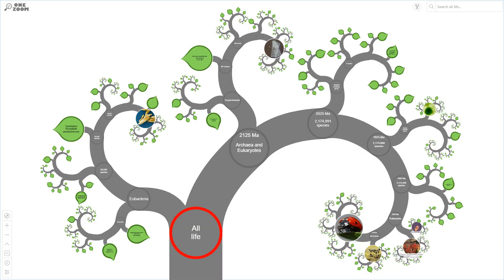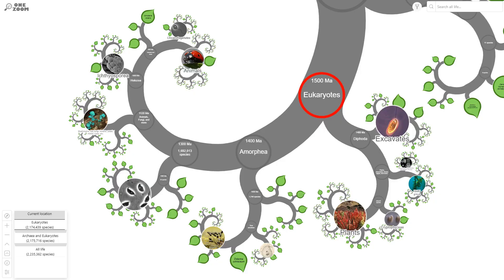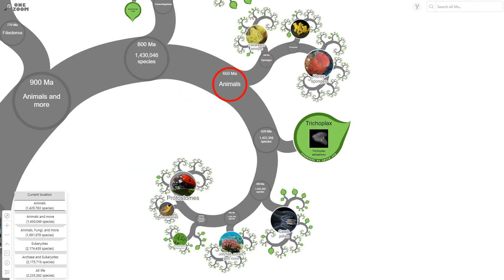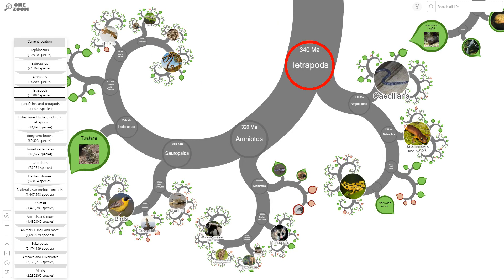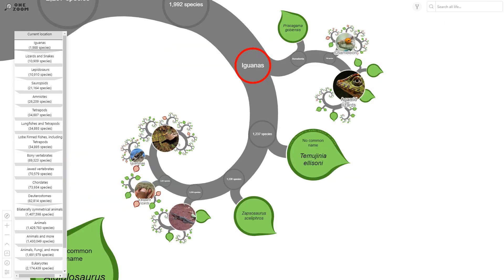To start off, let's give a rundown of the bearded dragon's taxonomy. This is basically where the animal is ranked on the phylogenetic tree of life, looking at which branch the particular organism lies along. The bearded dragon belongs to the clades Eukaryota, Opisthokonta, Metazoa, Bilateria, Chordata, Gnathostomata, Tetrapoda, Lepidosauria, Squamata, Iguania, Agamidae, Amphibolurinae, and the genus Pogona.